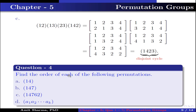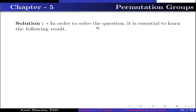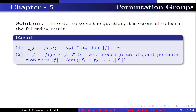Question number 4: find the order of each of the following permutations. The following results are essential. Result: if F is an r-cycle permutation in Sn, then the order of F is r. If F is the product of disjoint permutations F1, F2, ..., Fr in Sn, then the order of F is the LCM of the orders of F1, F2, ..., Fr.